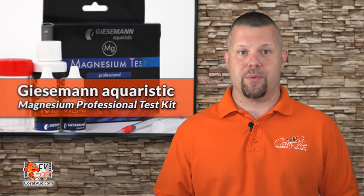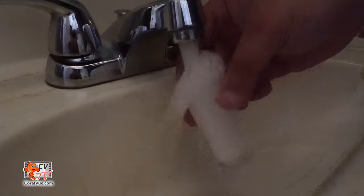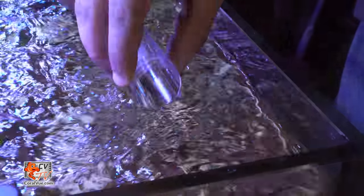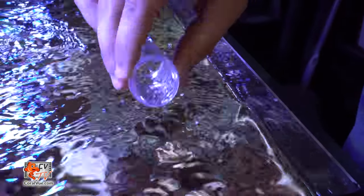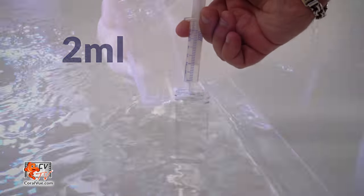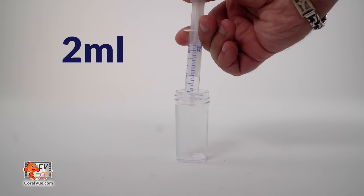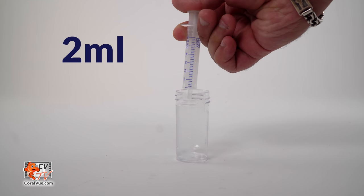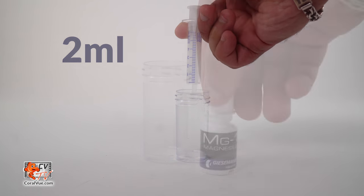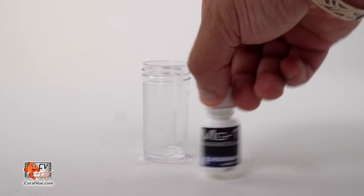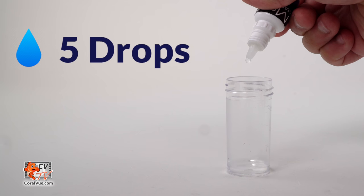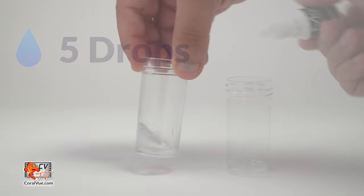Giesemann magnesium test kit is rather simple to perform. Rinse the test vial in running water, then rinse the vial several times with aquarium water. Once fully rinsed, fill it with two milliliters of aquarium water using the included syringe for increased accuracy. Carefully shake the MG1 reagent and then add 5 drops to the test vial and swirl for 20 seconds.